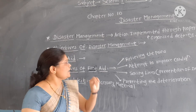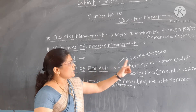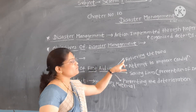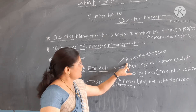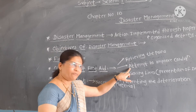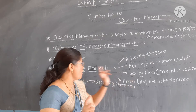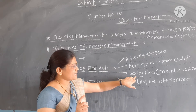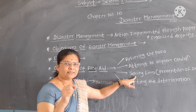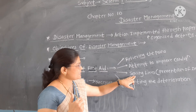The objectives of the first aid box include relieving the pain of the victim, attempting to improve the condition of the victim, and saving lives — that is, prevention from death — which is also a very important objective. For example, whenever there is a snake bite, you can use the blades and scissors in the first aid box to cut the wound and take out the blood, thus saving lives.